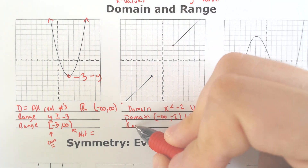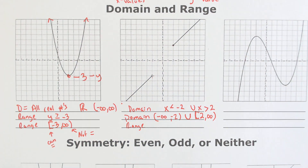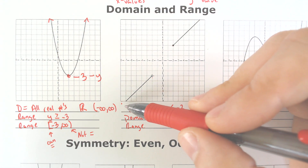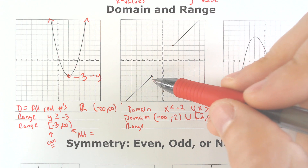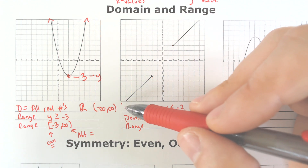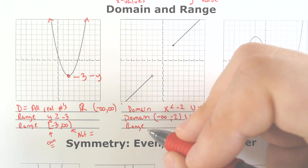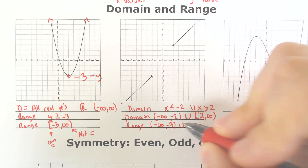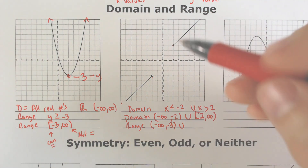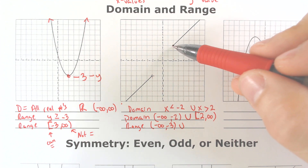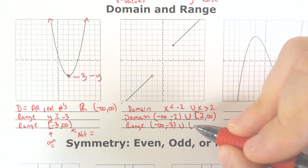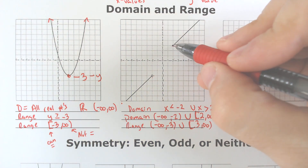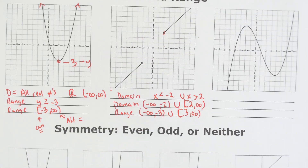Let's do the range. The lowest value is negative 3, and it's going from negative infinity for y all the way up to negative 3. So the range is going from negative infinity to negative 3, and it is also going from positive 3 all the way up to infinity. Positive 3 uses the bracket because it can equal it — that's the filled-in dot. Filled-in dots mean equal to.